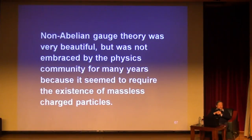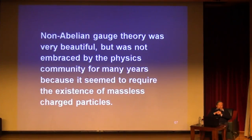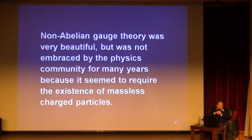The result was what is now called non-Abelian gauge theory. Non-Abelian gauge theory was very beautiful, but was not embraced by the physics community for many years, because it seemed to require the existence of massless charged particles. In fact, I published in one of my books a description of what happened in 1954, when I gave a talk at the Institute for Advanced Study about the work that Mills and I were doing on non-Abelian gauge theory. Pauli was in the audience and gave me a very hard time. The reason he was not believing in the non-Abelian gauge theory was because he believed the theory would lead to massless charged particles, which was both theoretically nonsensical and experimentally not confirmable.